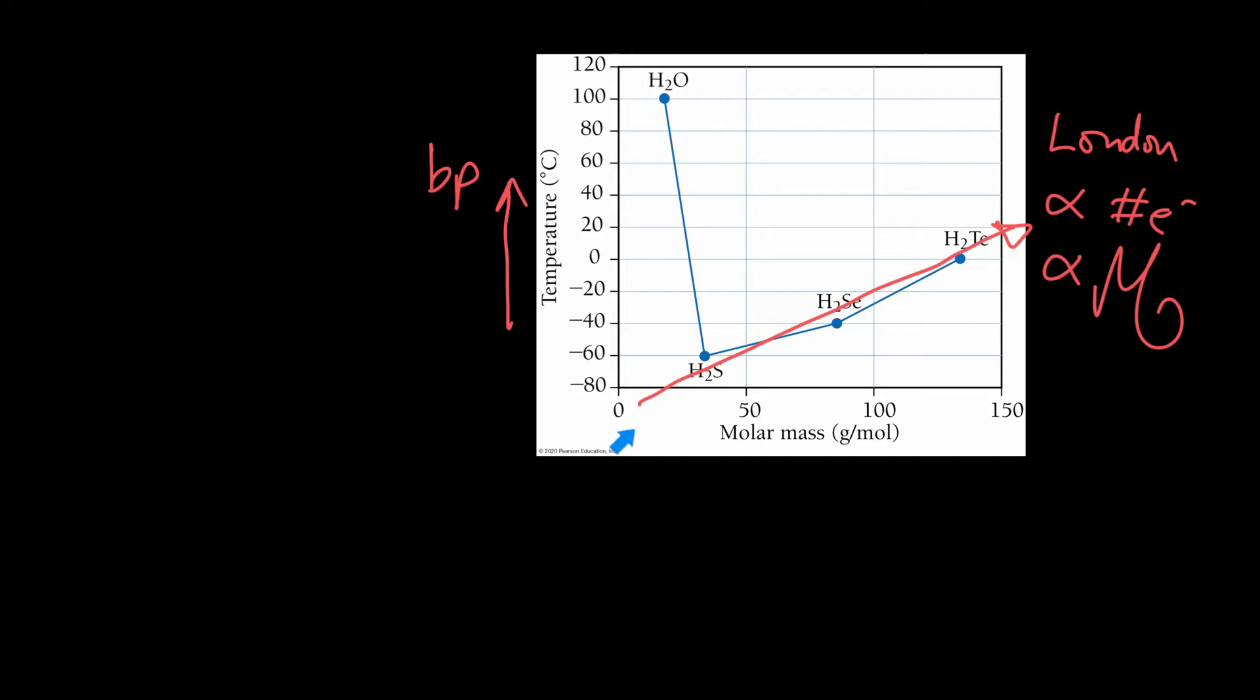And if you look at water, you can see water is way off base. Water should be all the way down here. So if I estimate water's boiling point, it should boil at about minus 90 degrees Celsius. But instead, we know it boils at about 100 degrees Celsius. So it's boiling about 190 degrees much higher than it should.